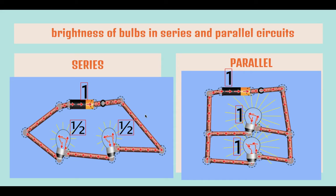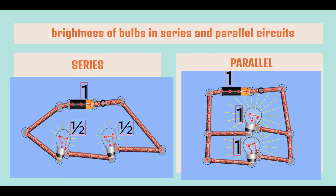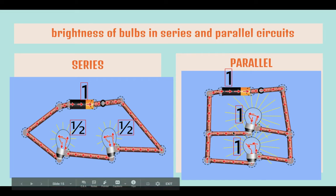On the other hand, in a parallel circuit, current has more than one path — it can flow through this path and also through the other path. So each bulb does not need to share the battery's power. Each bulb will receive power equal to the full battery power — one unit for each bulb. They do not have to share the battery's power because the electric current has more than one path to flow through.